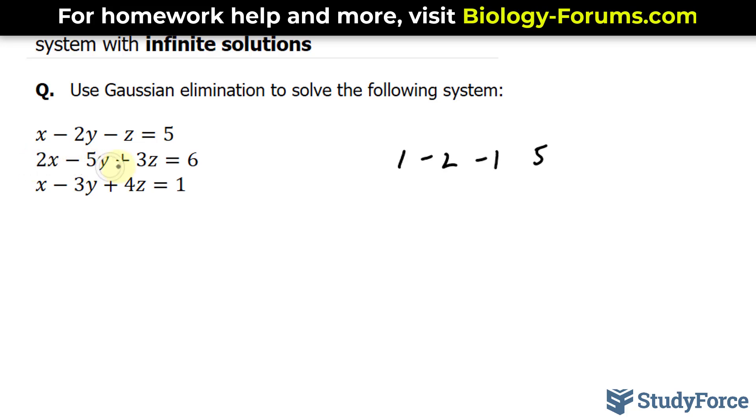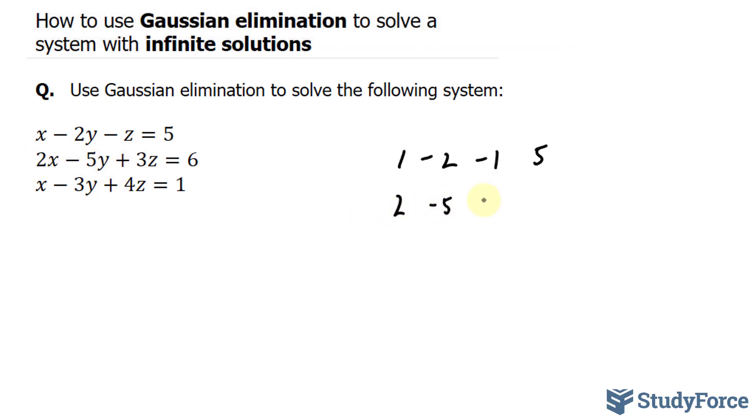For the next equation, I have 2, negative 5, positive 3, and positive 6. And lastly, we have 1, negative 3, positive 4, and 1.